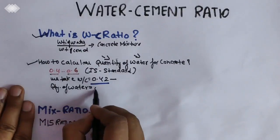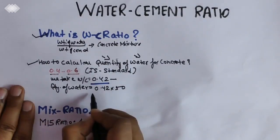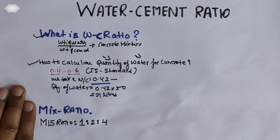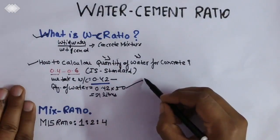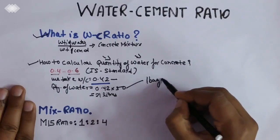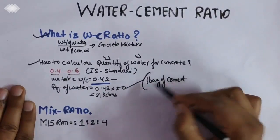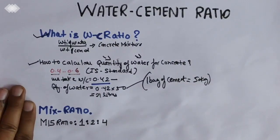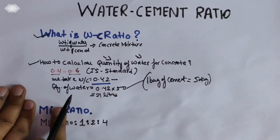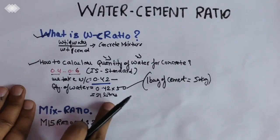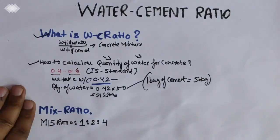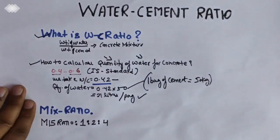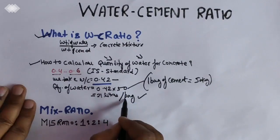Quantity of water will be calculated as water-cement ratio times 50. This comes out to be 21 liters. This 50 is nothing but one bag of cement, which equals 50 kg. So the required quantity of water is 21 liters per cement bag.